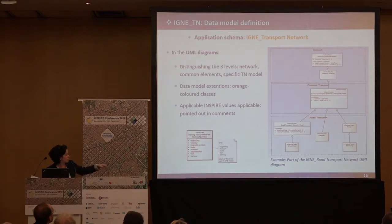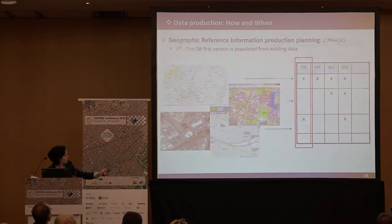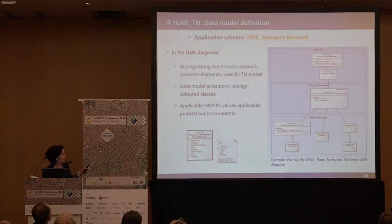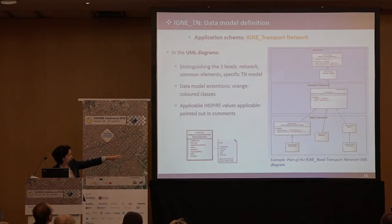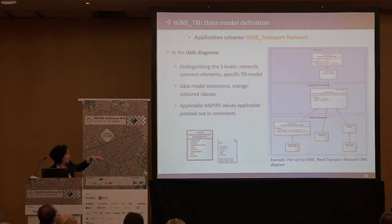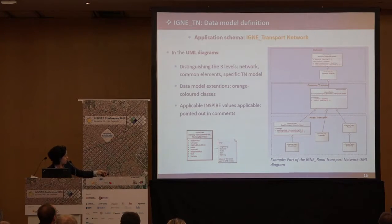Here, in this picture, which is an extract of the UML for road, you can see at the bottom part that the classes are coloured because they are an extension from our model — just to identify the differences or the extensions of the national schema from the INSPIRE schema. We have also added some comments just to specify the INSPIRE values that are applicable to our data.